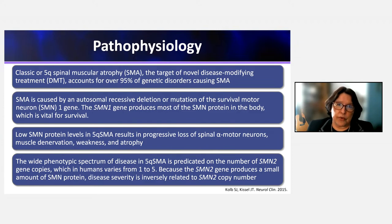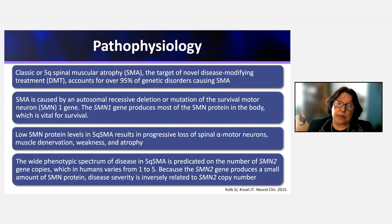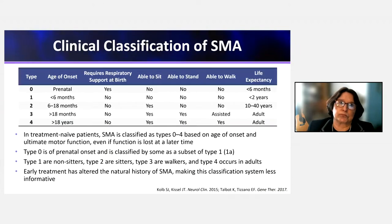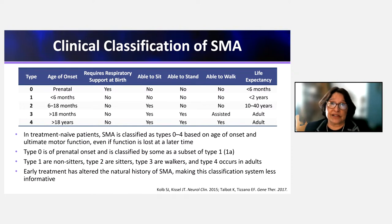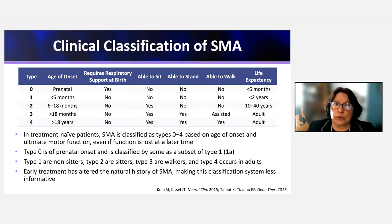The lower the number of SMN2 copy numbers, the more severe the phenotype. Inversely, the higher the SMN2 copy number, the milder the phenotype. This clinical classification of SMA was devised many years ago based on ultimate level of function, and it is still valid for patients assessed symptomatically, though less helpful when patients are treated before symptoms develop, as with newborn screening.